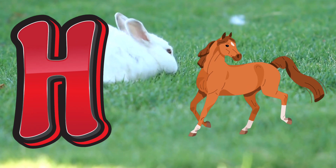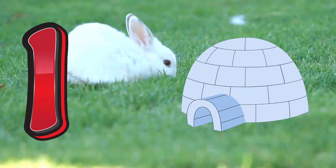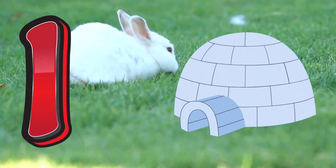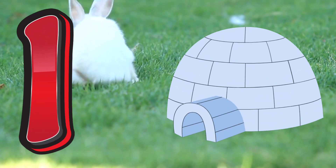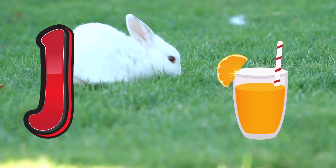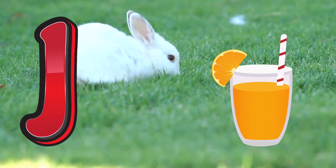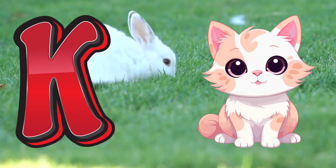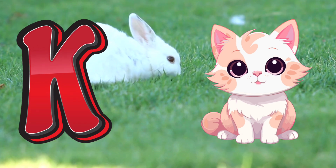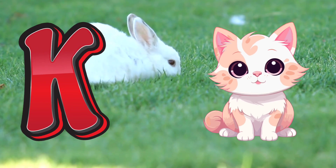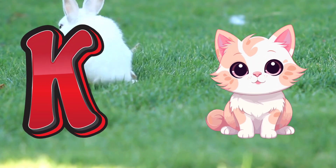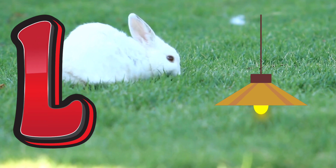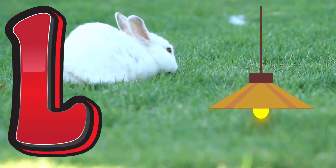I is for Igloo. J is for Juice. K is for Kitten. L is for Lamb.